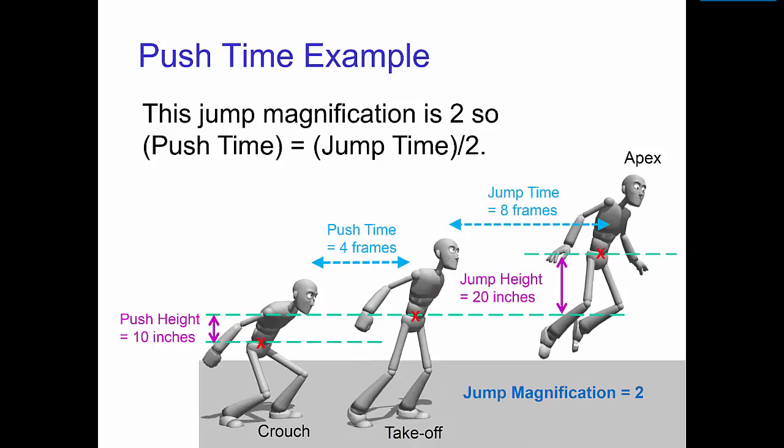Let's go through an example. Suppose that the push height is 10 inches and the jump height is 20 inches. Since 20 divided by 10 is 2, this means that the jump magnification is 2.